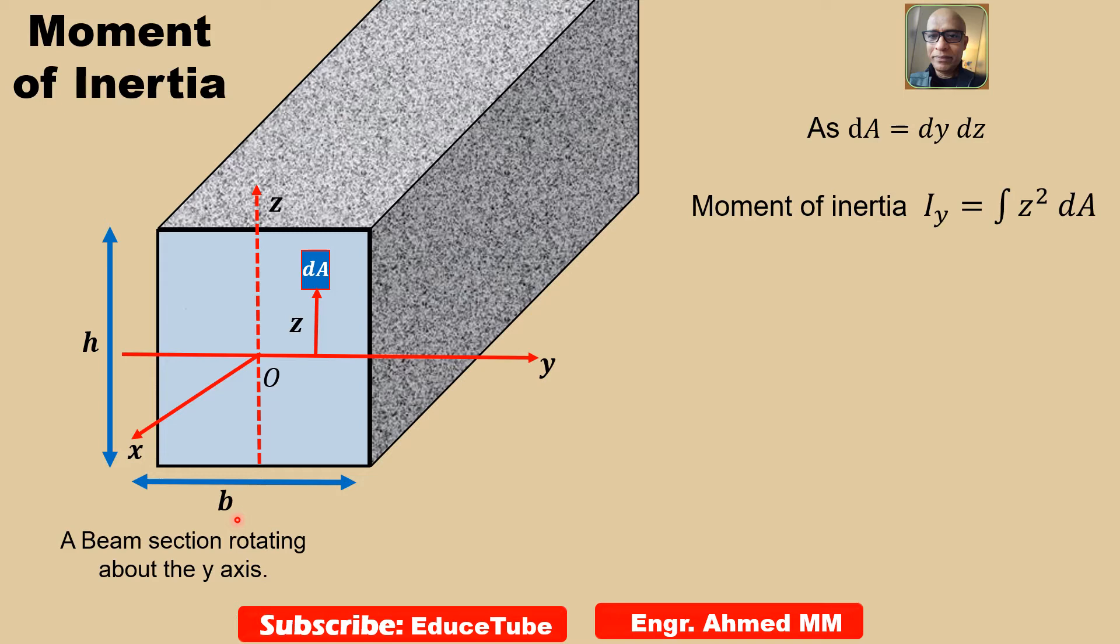Now, moment of inertia, that integral Iy equal to z squared dA. If we replace dA by dy dz, and another important point here, to solve this or to find the formula, we will use double integrals. As it is a multiplication of dy and dz, easily we can use double integrals. Only the things I added here, dA equal to dy dz.